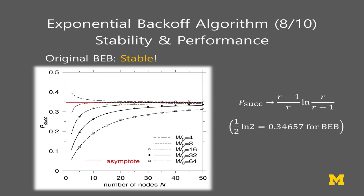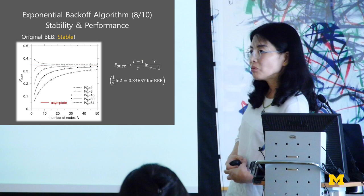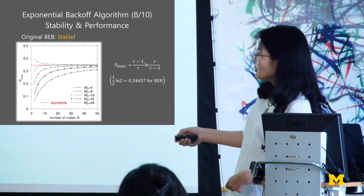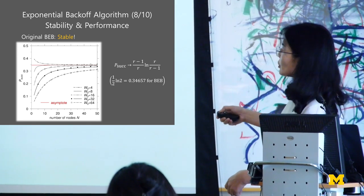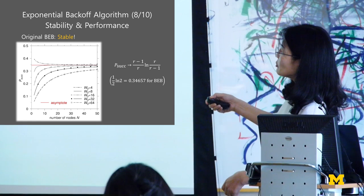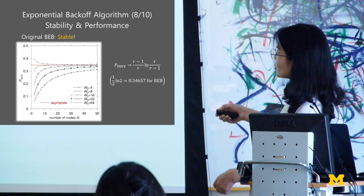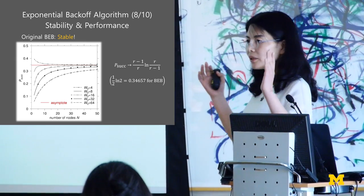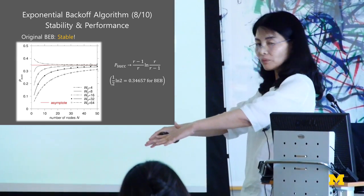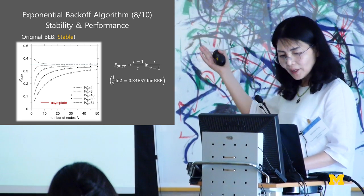This is the result — skipping the mathematics. I worked on the probability of transmission, probability of collision, and all other quantities, and obtained the probability of success. It yields a very nice closed form. No matter the minimum contention window size, it converges to the same number. This graph is for the binary exponential backoff algorithm — the throughput doesn't go to zero, which means it's stable.